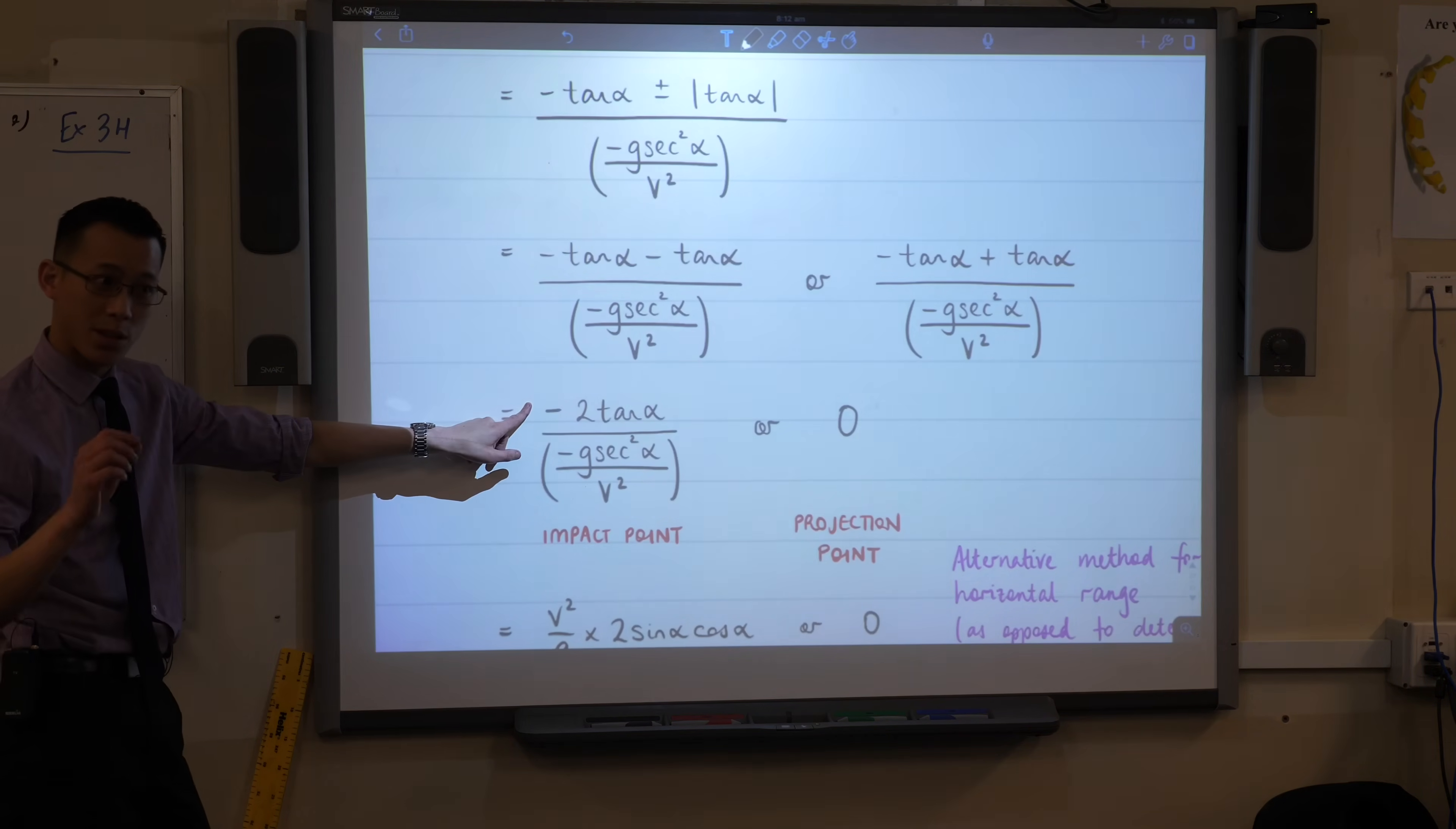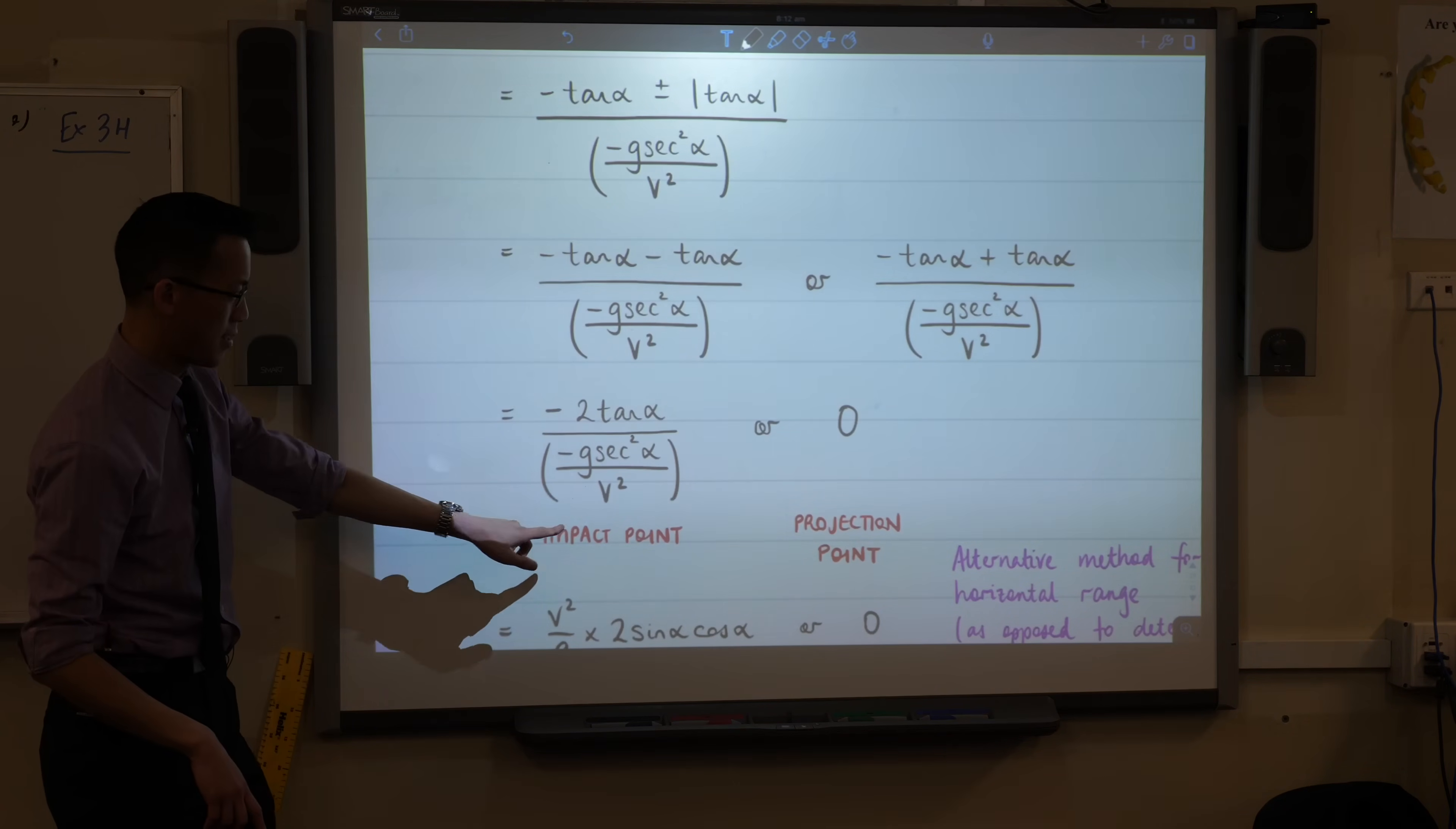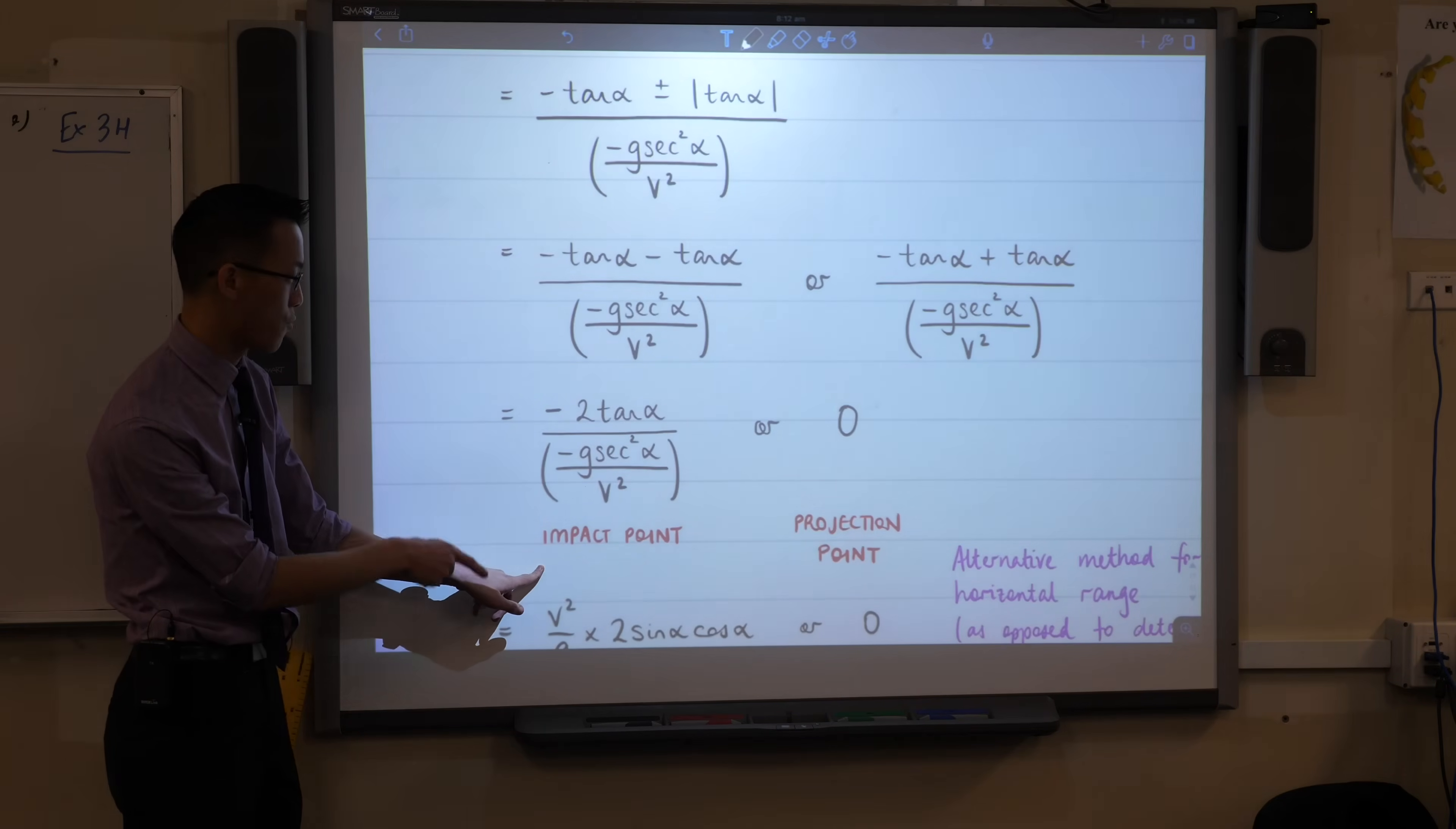So you've got zero, and then over here you get this. Now this still doesn't look very pretty, but because I've got all of these trig ratios in here, fractions and fractions, I can still work on it further. So you can see that this is the projection point. This is where I started, x equals zero. And once I simplify this, this will be the point of impact. This is what I'm after, right?